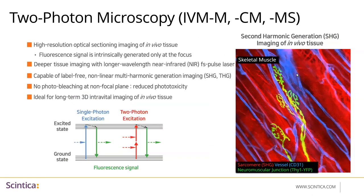Two-photon microscopy is a technique that utilizes two photons of a longer wavelength — with lower energy — to excite fluorophores. Components of tissue such as hemoglobin absorb and scatter incident excitation light of most visible wavelengths, which limits light penetration and results in low emission signals. The two-photon technique uses near-infrared excitation light, and since tissues are effectively transparent at these wavelengths, the background signal is strongly suppressed. The combination of these effects increases the penetration depth and reduces photo-bleaching of your sample, which is why two-photon is often used for deep tissue microscopy.